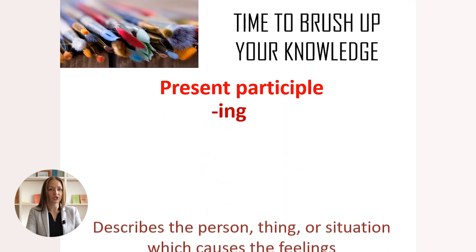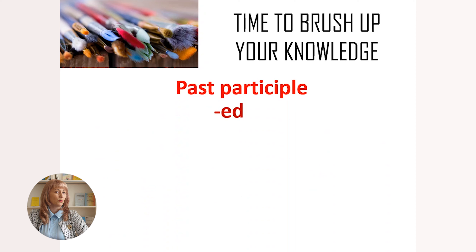The present participle of the adjective — that is the -ing ending — is used to describe the person, thing, or situation which causes the feelings. Look at the following examples: amazing, boring, exciting, interesting.